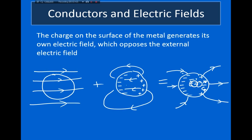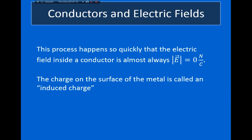The reason the electric field has to be zero is that if the electric field wasn't zero inside the metal, then the electrons would be able to move in response to that electric field, and the electrons are always going to move until they eventually cancel it. And because the electrons have such an incredibly small mass, they will move almost instantly to cancel out any electric field. So this process happens almost instantly, and the electric field inside a conductor is almost always equal to zero. This charge that forms on the surface of a conductor is called an induced charge.